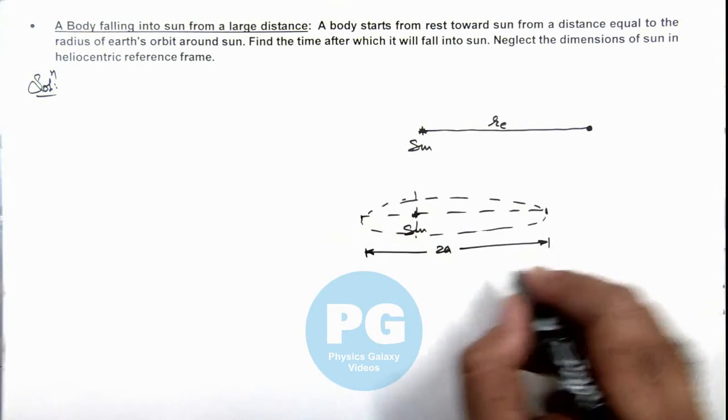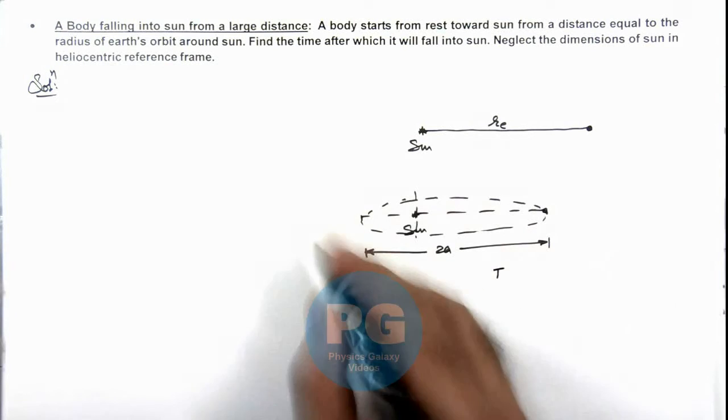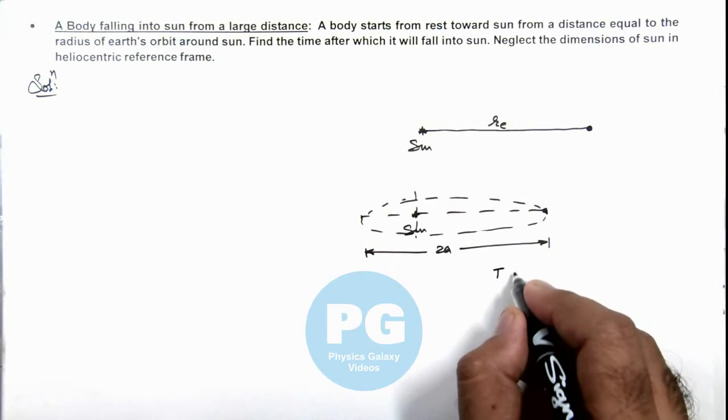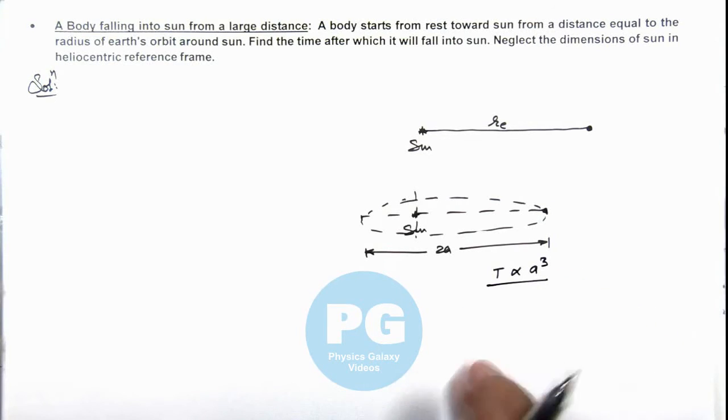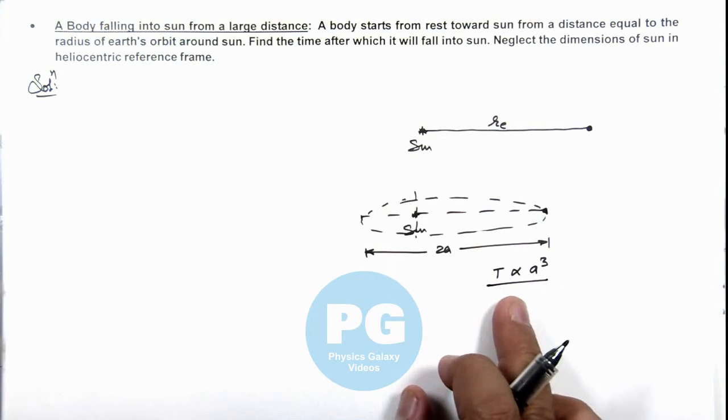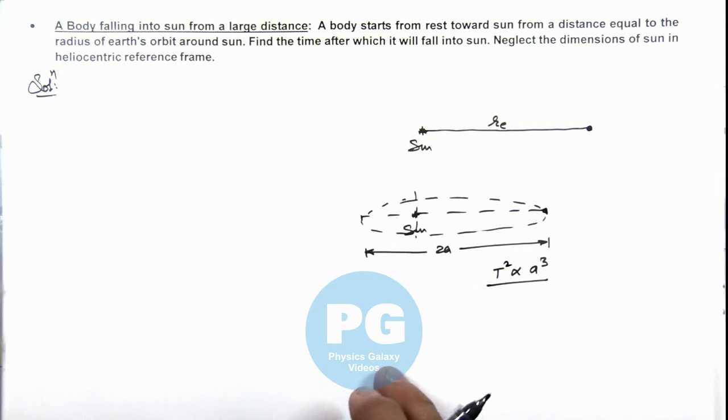Then the time period of revolution of the body in the surrounding of sun in elliptical path can be written as proportional to ay cube. That is Kepler's law of period. We already discussed that time period square is directly proportional to ay cube.